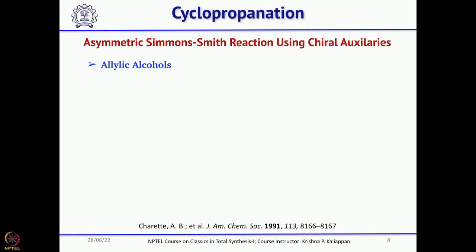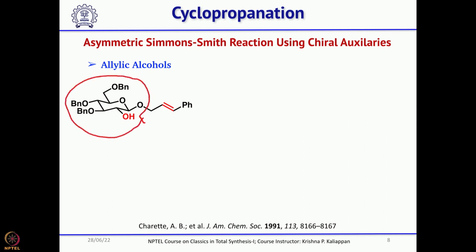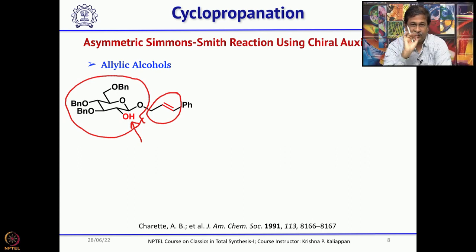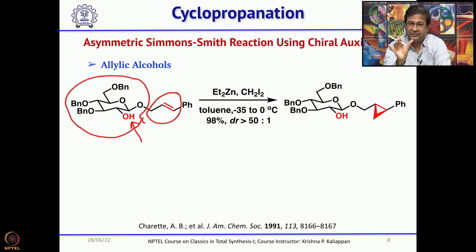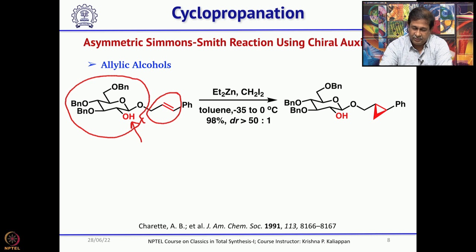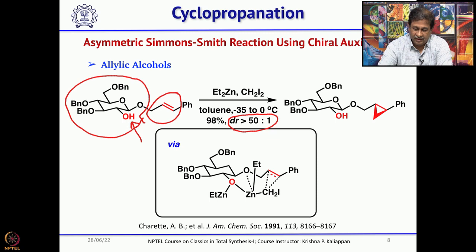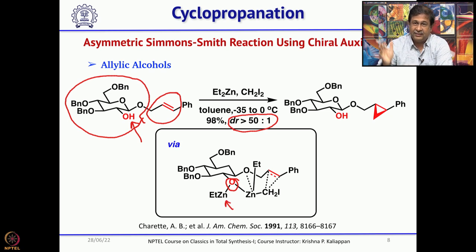The first method was reported by Andy Charette. He used an allylic alcohol and a chiral auxiliary — starting with a sugar unit where the hydroxyl group directed the cyclopropane. He took this compound and treated with CH₂I₂ and diethylzinc, which in situ prepares the CH₂ZnI species. This gave about 98% yield with a diastereomeric excess of 50:1 — a very interesting method. The mechanism shows the free hydroxyl group first forms a bond with zinc, then coordinates with zinc and CH₂I, and intramolecularly delivers the CH₂ to the double bond.